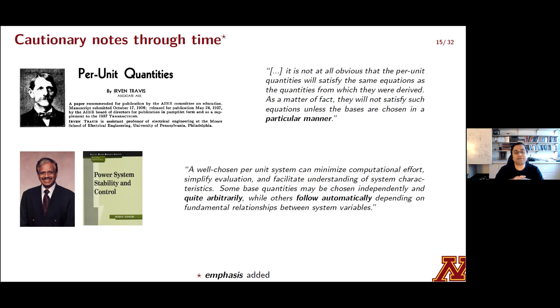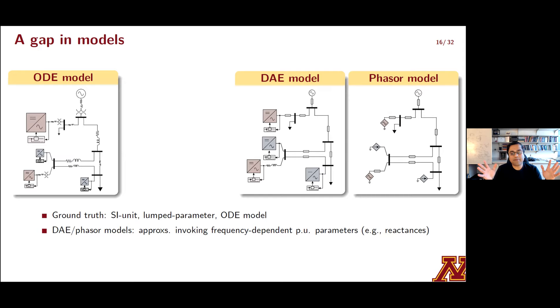Similarly, Professor Kundur in his famous textbook on power system stability and control says, you know, he tells you about the virtues of per unit modeling. He says it can minimize computational effort, simplify evaluation, and so on and so forth. But then he says, some of these quantities may be chosen independently and quite arbitrarily, while others follow automatically. So this very clearly betrays a sense of confusion about the process in general. So is it particular or is it arbitrary? Which base quantity should follow automatically? So on and on, we can go about this as well.